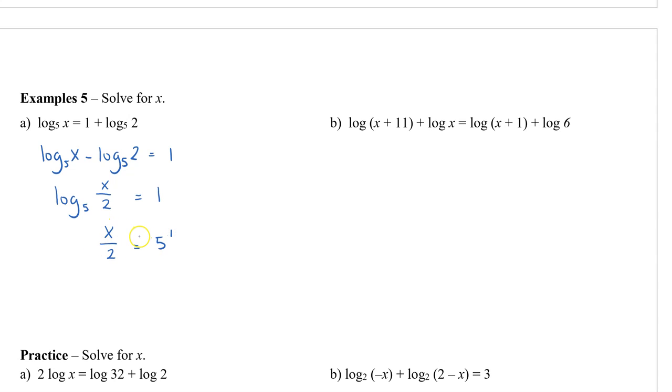We just have to multiply both sides by two. So x equals ten. We're going to check. We can see that a restriction here is that x has to be greater than zero, and our solution satisfies that. So x equals ten is our solution.